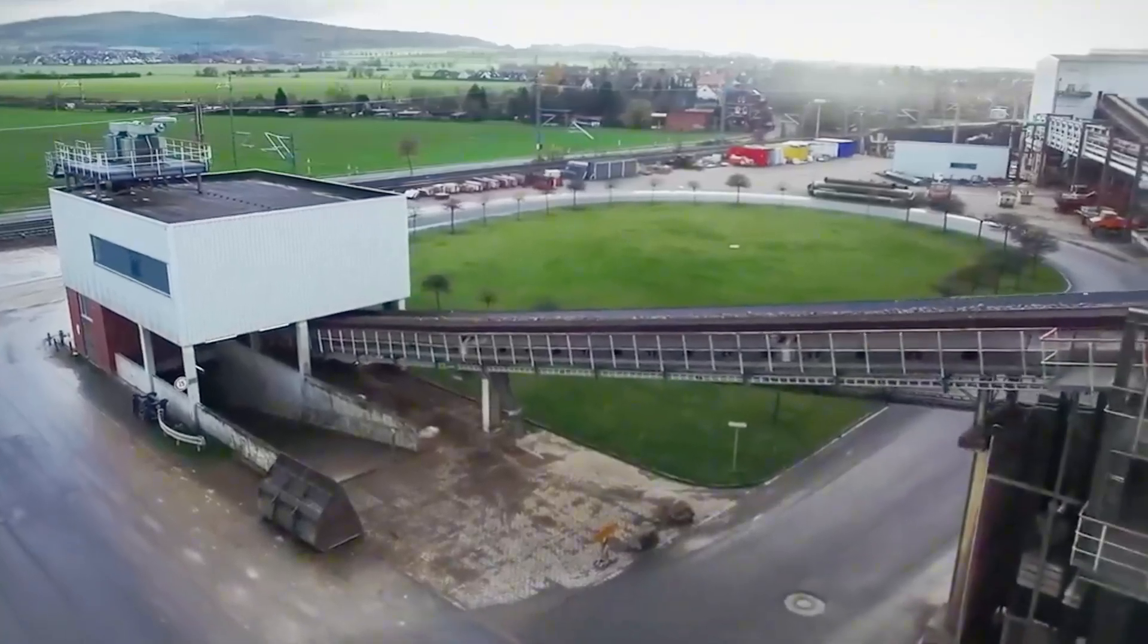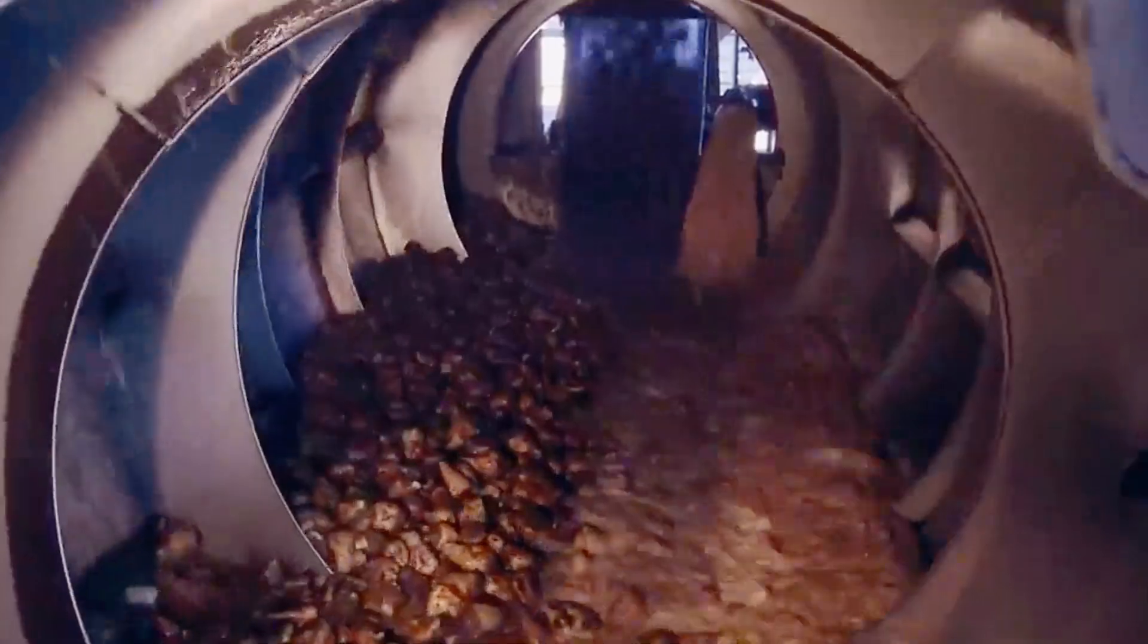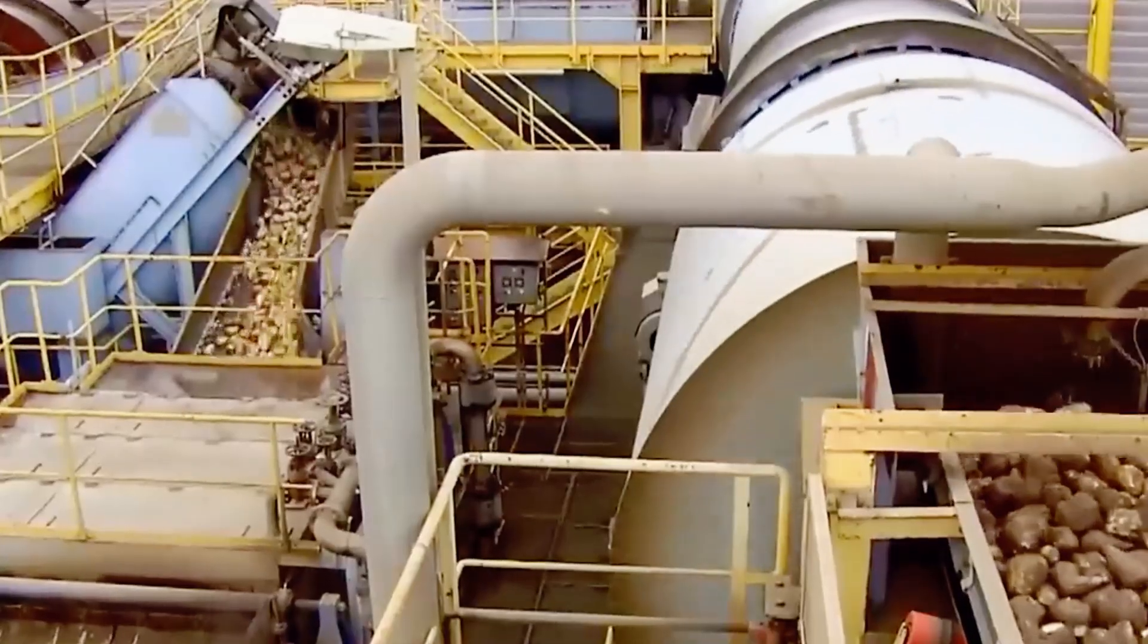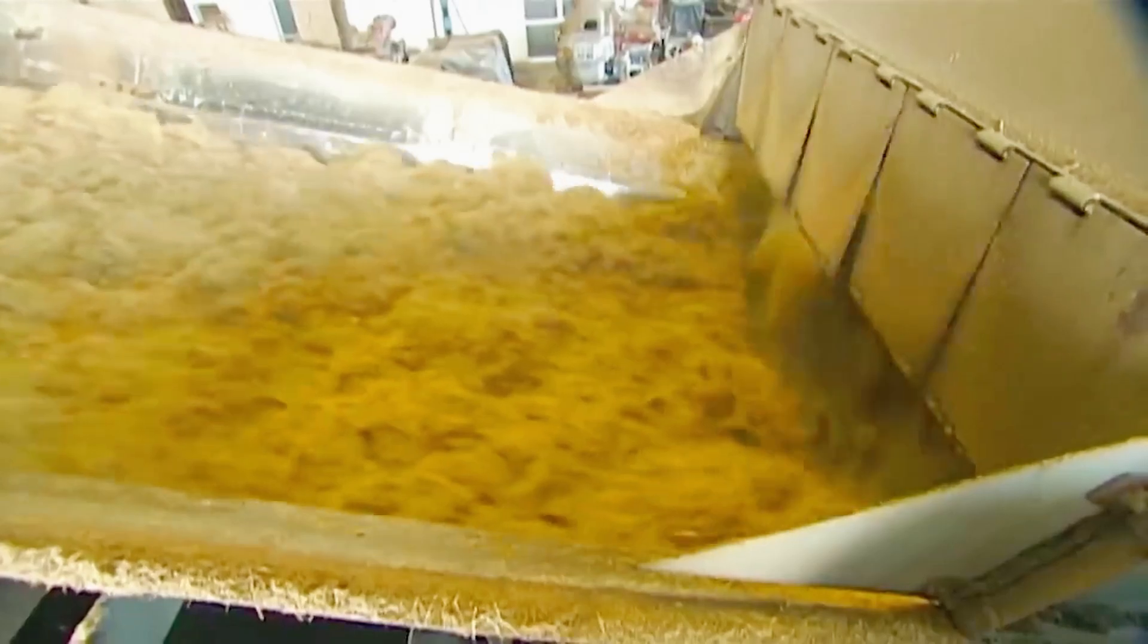Once the sugar cane or sugar beets are harvested, it's time to extract the sweetness that lies within. The first thing that needs to happen is cleaning and preparing the raw material. For sugar cane, the stalks are chopped into smaller pieces and then the juice is extracted by crushing the cane under heavy rollers. This process is called milling.